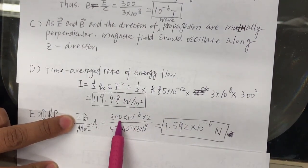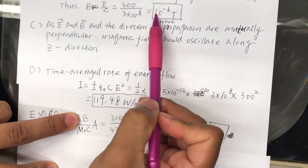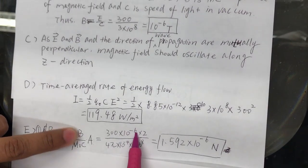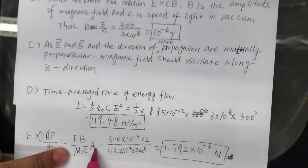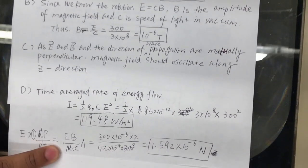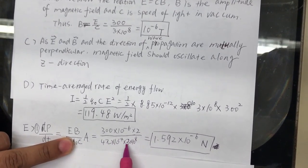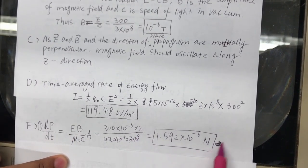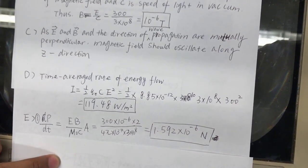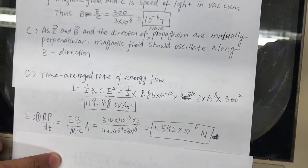E is 300. Magnetic field, 10 to the minus 6. Area is 2 meters, so times 2, divided by mu naught, which is 4 pi times 10 to the minus 7. Speed of light is 3 times 10 to the 8th. So, we end up with 1.592 times 10 to the minus 6 newtons.